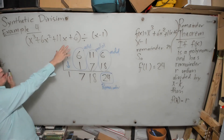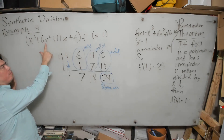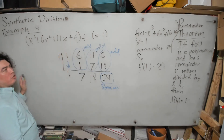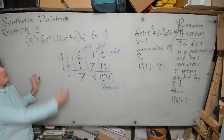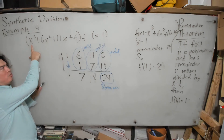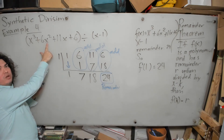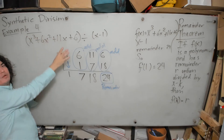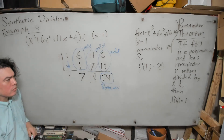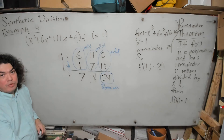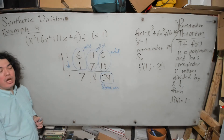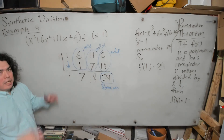Let's see what happens if we evaluate directly: 1 plus 6 is 7, plus 11 is 18, plus 6 gives 24 — the same answer. In this case it was easy because x cubed and x squared both equal 1 when x equals 1. But in general it might not be so simple to evaluate directly, so having the remainder theorem will be a great benefit.